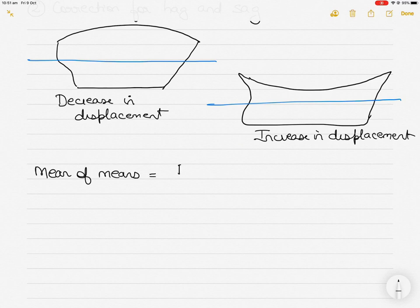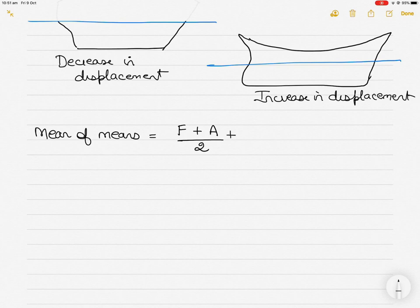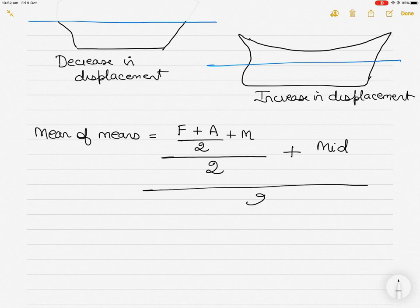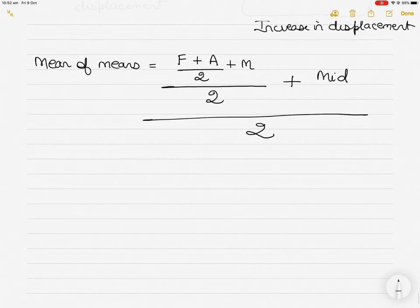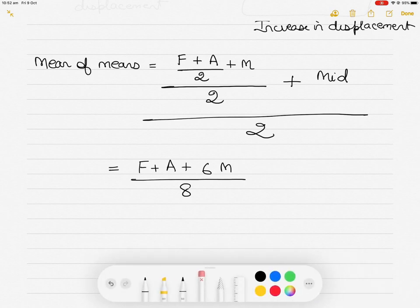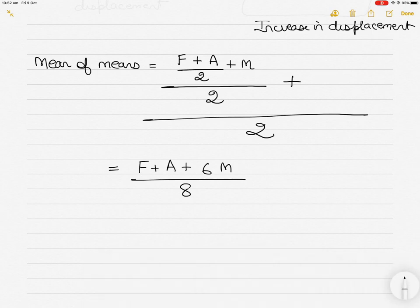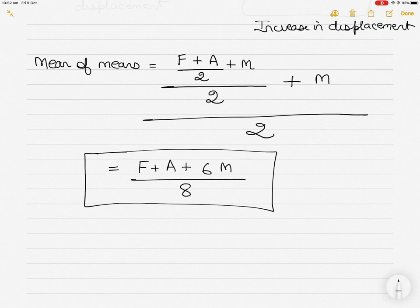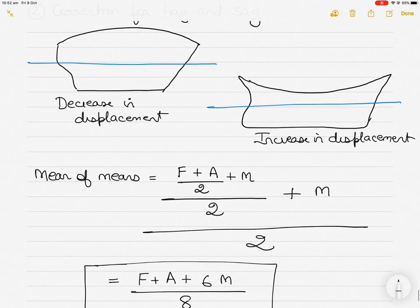The mean of means is found as: [(forward draft + aft draft) ÷ 2 + midship draft] ÷ 2. Combining, this gives: (F + A + 6 × M) ÷ 8, where M is the midship draft. The displacement of the vessel can now be found using this mean of means draft, correcting for hogging and sagging.